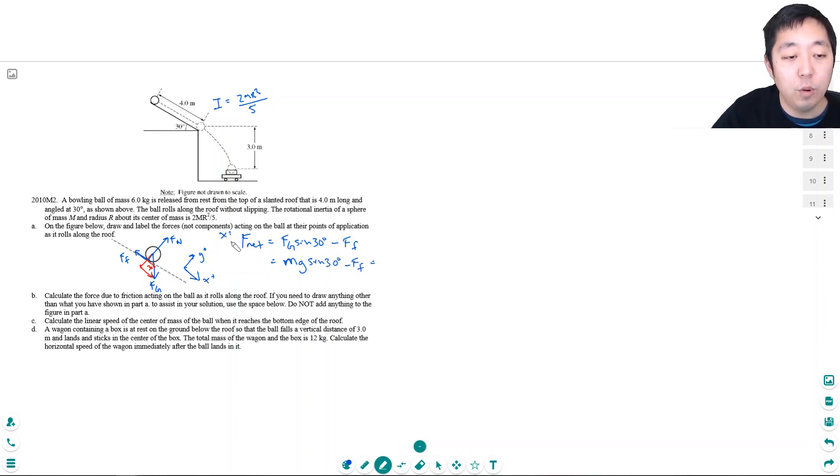Now, this net force, because it is accelerating, it definitely has to be equal to M times A. So, I don't really know the acceleration. I don't know the force of friction. This is not enough for me to solve anything. I know the mass, and I know G, but I don't know what A and force of friction are. So, I need another equation, and that's the net torque equation.